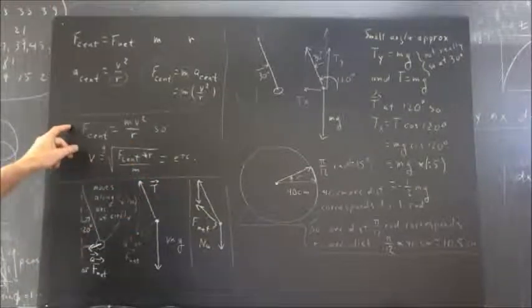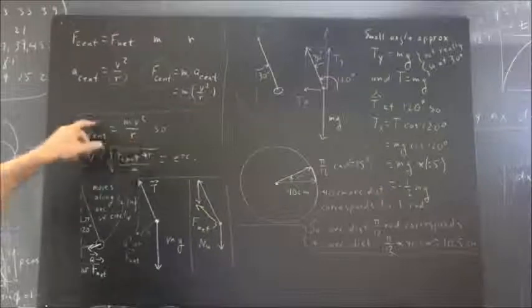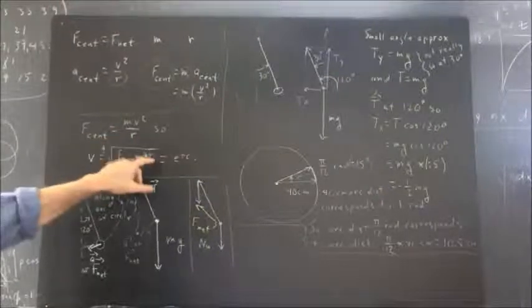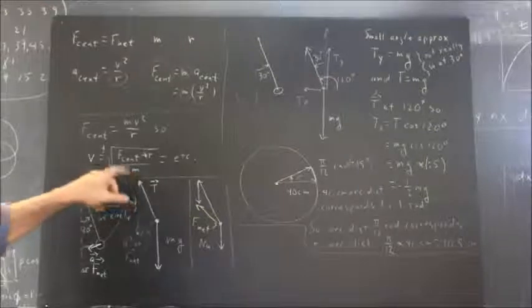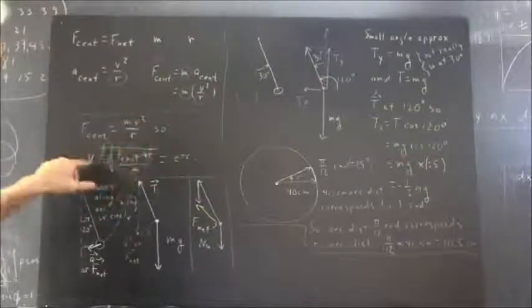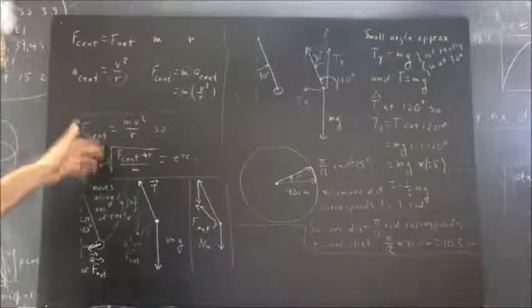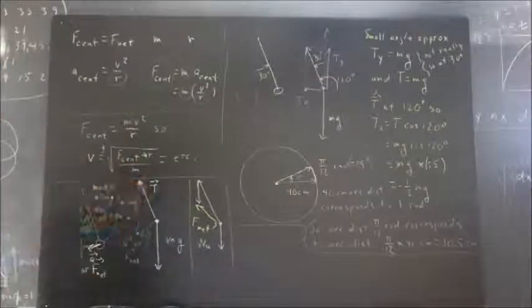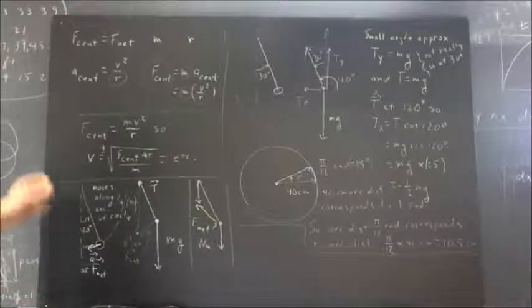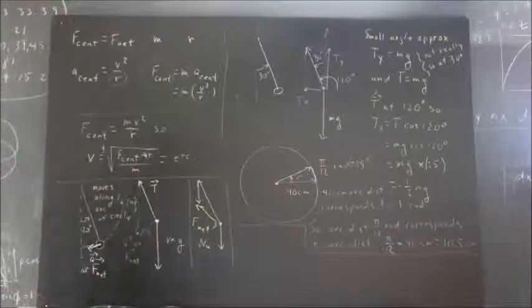Multiply both sides by R. We get F centripetal times R. Divide by M. We've got centripetal force times R divided by M, and that would give us V squared. We take the square root, plus or minus the square root of both sides, and we get velocity. Okay, and that solves the problem.